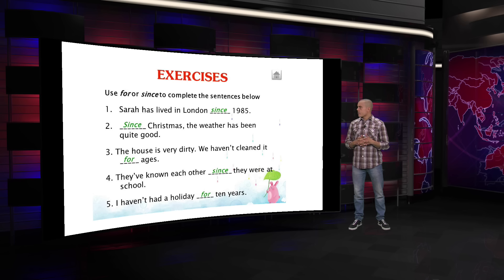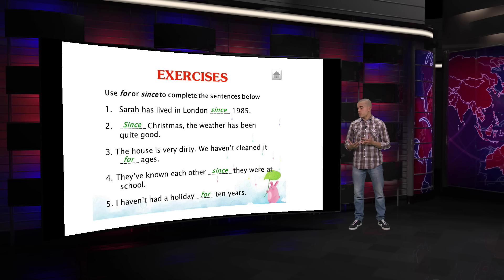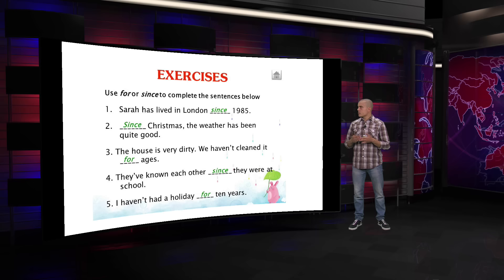Number three: The house is very dirty. We haven't cleaned it for ages. There has been a long time since you cleaned your house. The house is very dirty — we haven't cleaned it for ages, meaning it has been a long time, but we don't know exactly the point since it was last cleaned. That's the difference: SINCE gives the definite point; FOR is the duration and is not precise.